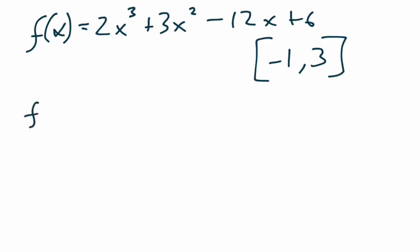So our first step here is to find the candidates, and of course to do that we need to find the critical numbers which involve taking the first derivative, so 6x squared plus 6x minus 12, and then setting this equal to 0.